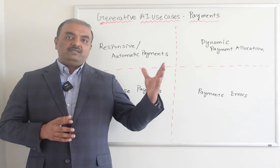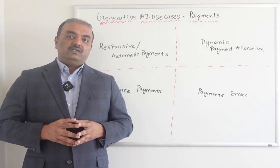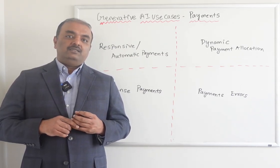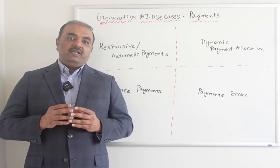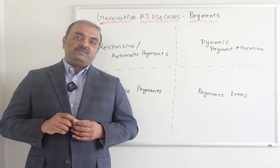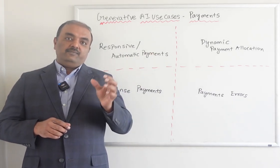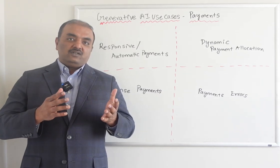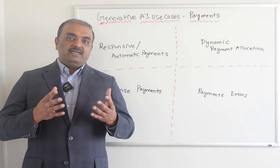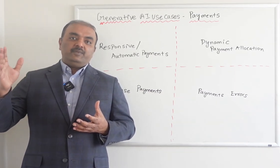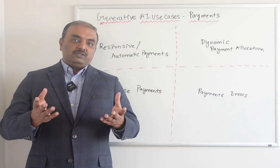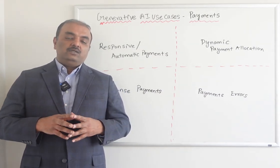Suspense payments — say you get a payment for $500. Unfortunately, the payment information doesn't have the required details like who is the customer and what invoice the payment is for. Instead of waiting for the actual information, AI can give you recommendations. It can read the data in the payment details and use technologies like natural language processing, and based on historical data, the AI says it should be for customer ABC. You review it and then apply the payment.